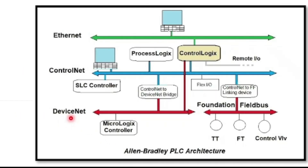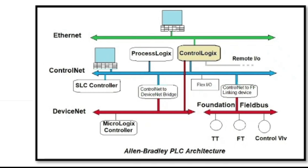DeviceNet is an open, low-level connection link that connects simple process measurement devices like sensors and actuators. It is the lowest level of communication, getting data directly from the field. The ControlLogix controller can also get data via a wired fieldbus foundation directly from the field, and from ControlNet we can gather data from all those networks, provided the required modules are in place.